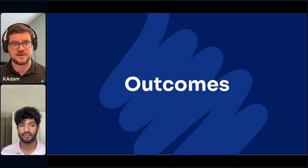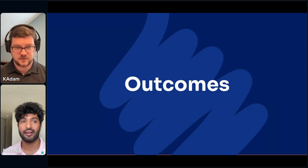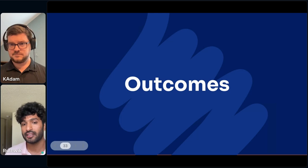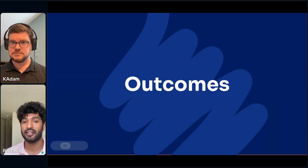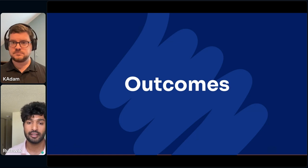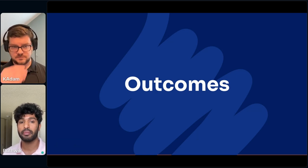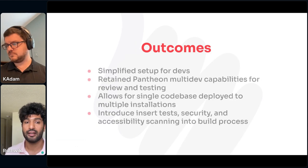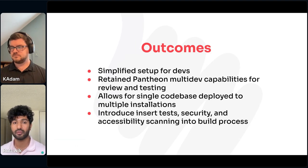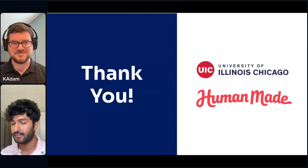The collaboration with HumanMade helped us simplify a lot of the development and deployment process. Now we can update our plugins without worrying about breaking the website. We can run multi-dev environments without affecting other sites, and they're automated using GitHub Actions — they can be deleted once the pull request is closed. We can now deploy to multiple installations using a single codebase, automate our testing, and add security and accessibility scanning into our build process. This has been a great experience and really helped us improve development and add new features to our Red platform.